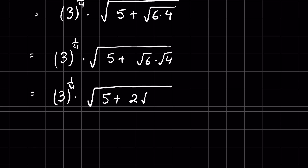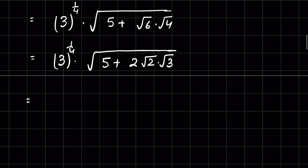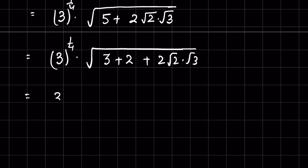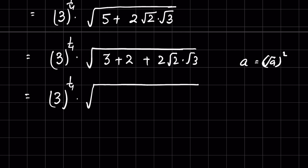√4 equals 2, and √6 can be written as √(2×3), which equals √2 × √3. So we have 3^(1/4) times (5 + 2√2·√3). We can also write any number a as √(a²), since square root means raising to 1/2, and squaring then taking the root cancels out.